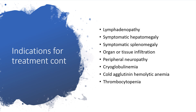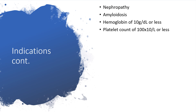We have to treat if we are dealing with lymphadenopathy, symptomatic hepatomegaly, symptomatic splenomegaly, organ or tissue infiltration, peripheral neuropathy, cryoglobulinemia, Raynaud's phenomenon, urticarial vasculitis, cold agglutininemia, hemolytic anemia on Coombs test, and thrombocytopenia leading to bleeding. We also have to treat when dealing with nephropathy and amyloidosis that could destroy many organs. We have to treat when hemoglobin is 10 g/dL or less, and we have to transfuse when platelet count is very low — at 100 or less, we have to treat.